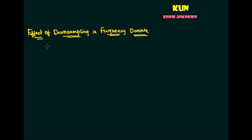Welcome back. Today we are going to discuss the effect of downsampling in the frequency domain. In previous videos we discussed how downsampling affects the time-frequency indexing, the maximum digital frequencies, and how all analog frequencies can be captured in the digital domain in the Fourier transform in the frequency range of 0 to FS/2. We also covered the time-frequency indexing relationship from continuous time to the discrete domain.